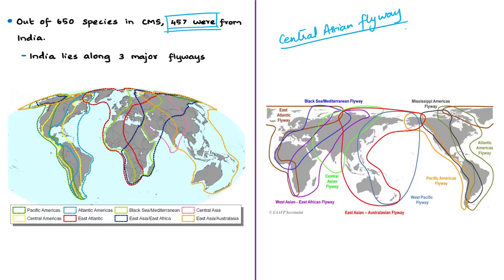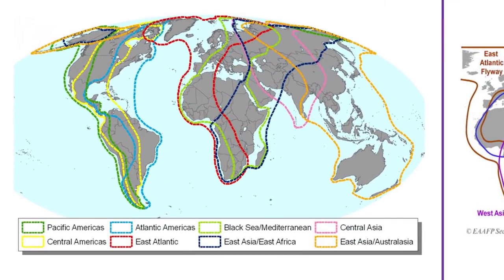Flyways are the flight paths used by birds while migrating from one place to another throughout their annual cycle. They include breeding areas, migration stopovers, and non-breeding or wintering sites. As per the CMS convention, there are eight flyways in the world.